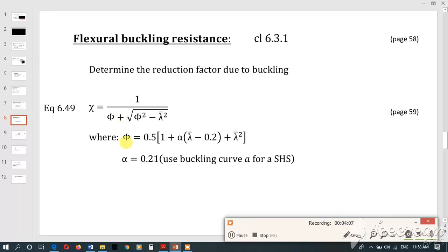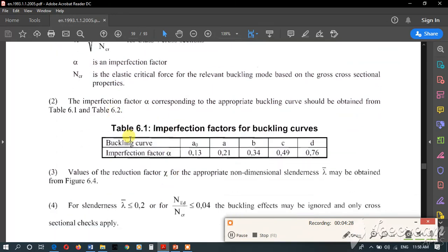In order to calculate this relationship or this value, we'll need this alpha value. The alpha value can be obtained from table 6.1. Table 6.1 shows buckling curves and imperfection factor alpha. So, what is buckling curve?